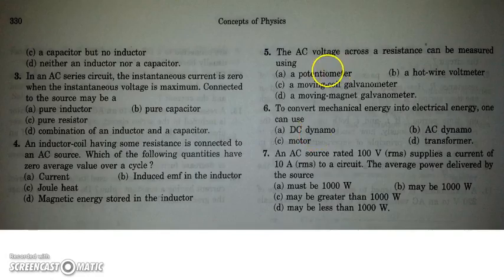AC voltage across resistance can be measured using a hot wire voltmeter. This is a theoretical question, so you should know it, how it works.